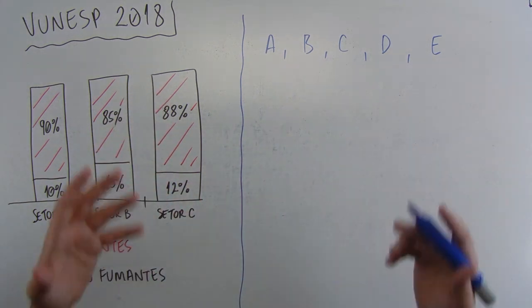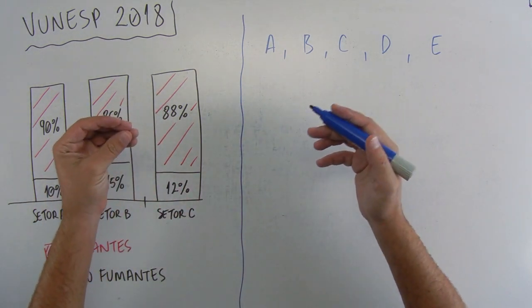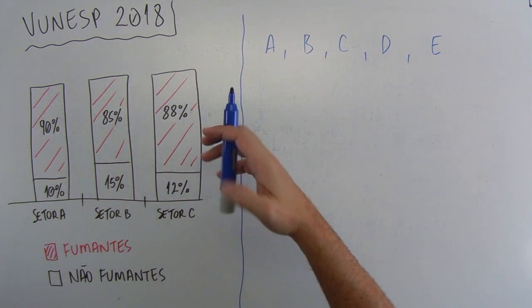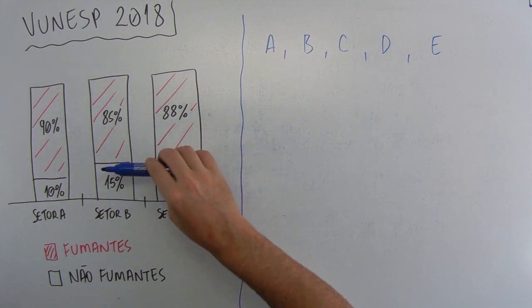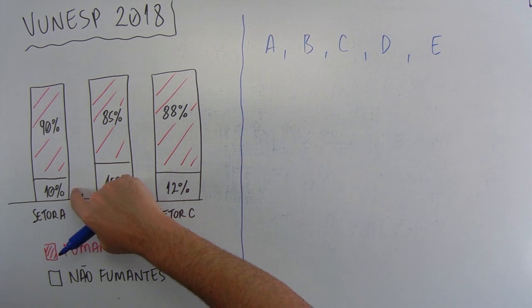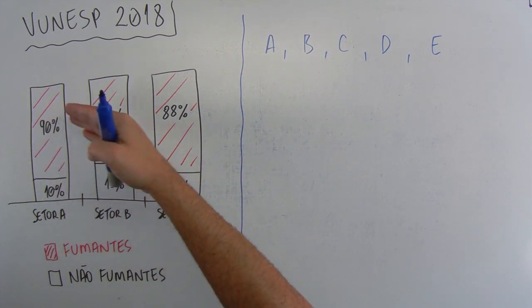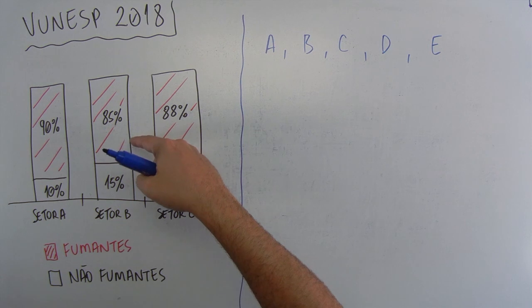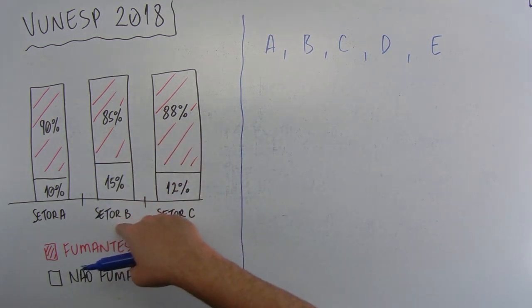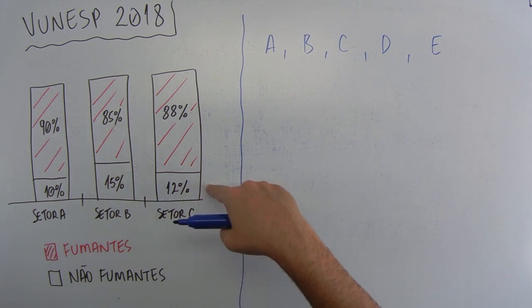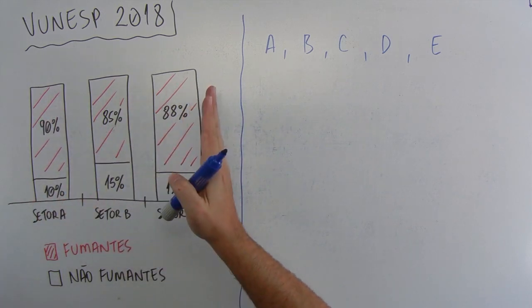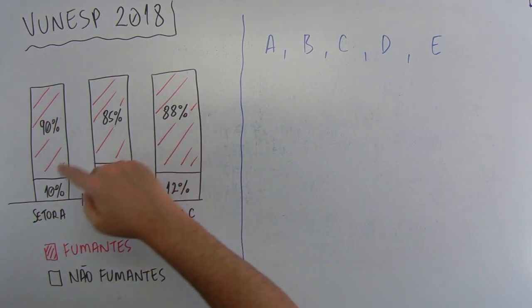E aí, conforme a gente for lendo as alternativas, eu vou riscando aqui para a gente encontrar o gabarito, porque essa questão aqui é mais teórica do que a gente precisa fazer contas. Então, devagarzinho. Letra A. Antes da gente ver as alternativas, claro, vamos ver o enunciado, mas vamos dar uma olhada aqui no gráfico. Então, a gente tem três barrinhas aqui. Elas estão divididas em dois setores, ou melhor, dois segmentos aqui, cada uma delas, que aqui tem 10% e 90%, somando os dois vai dar 100%, que é do setor A.